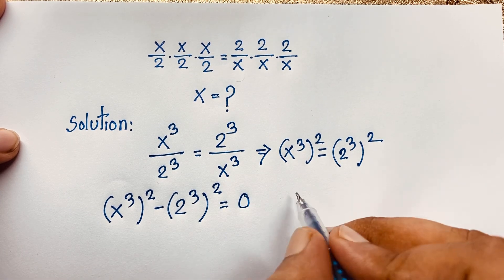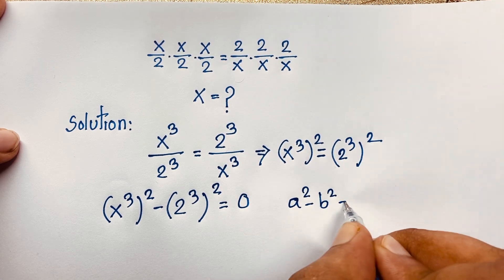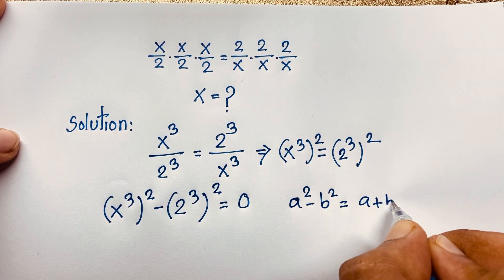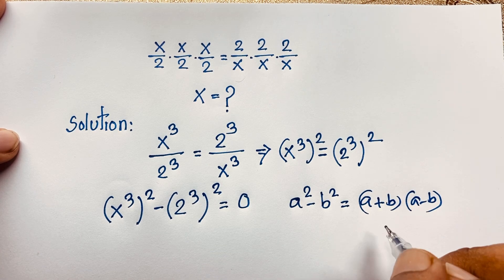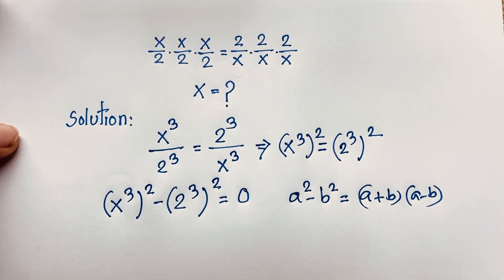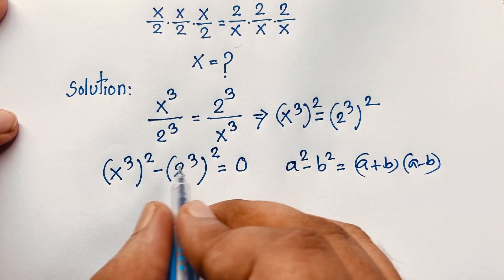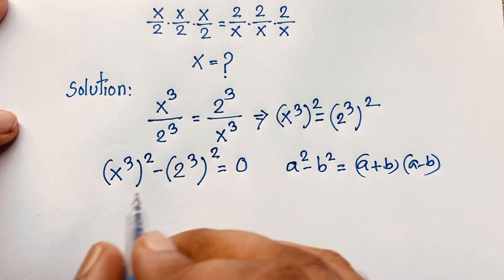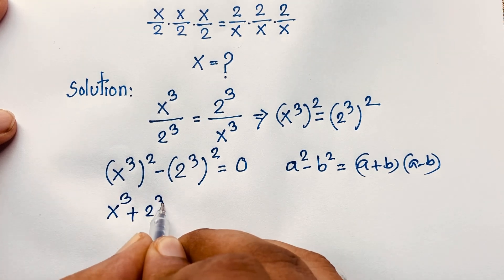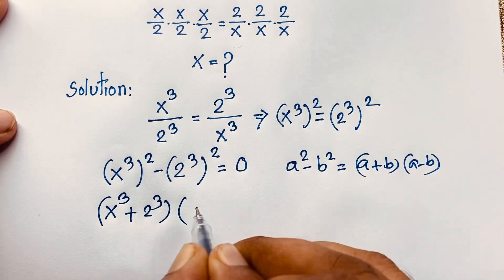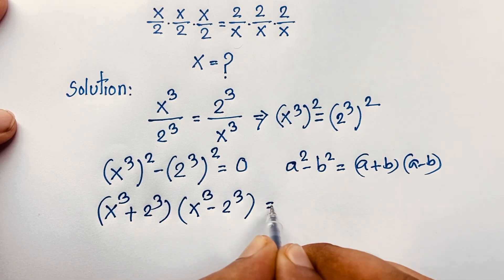Now I apply the difference of squares formula: a² − b² = (a + b)(a − b). Applying this math formula here, where a = x³ and b = 2³, we get (x³ + 2³)(x³ − 2³) = 0.